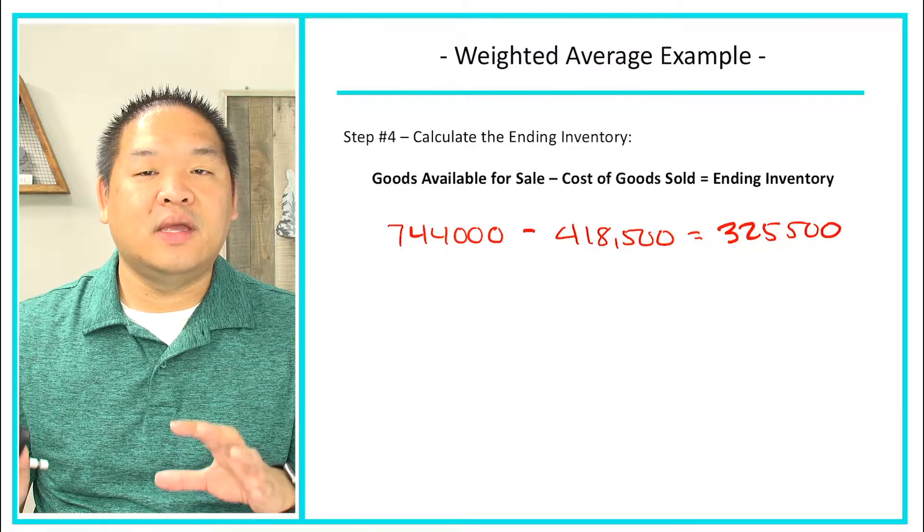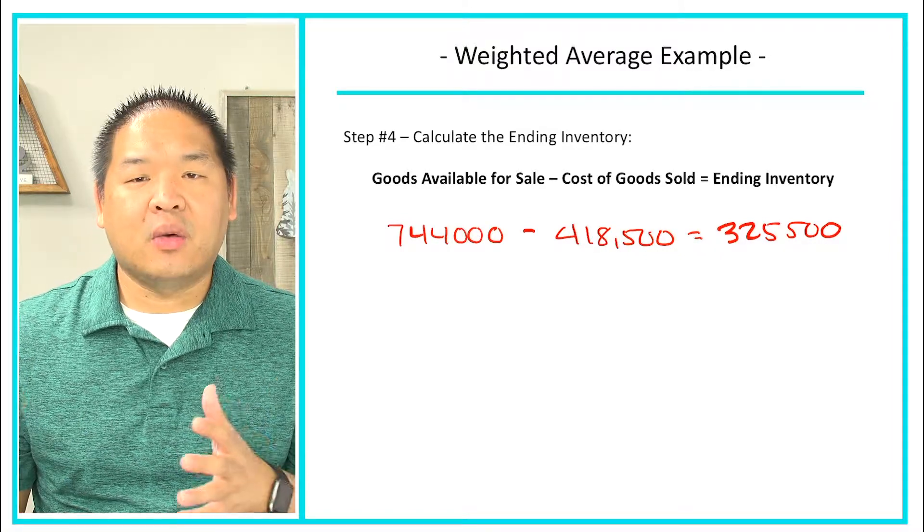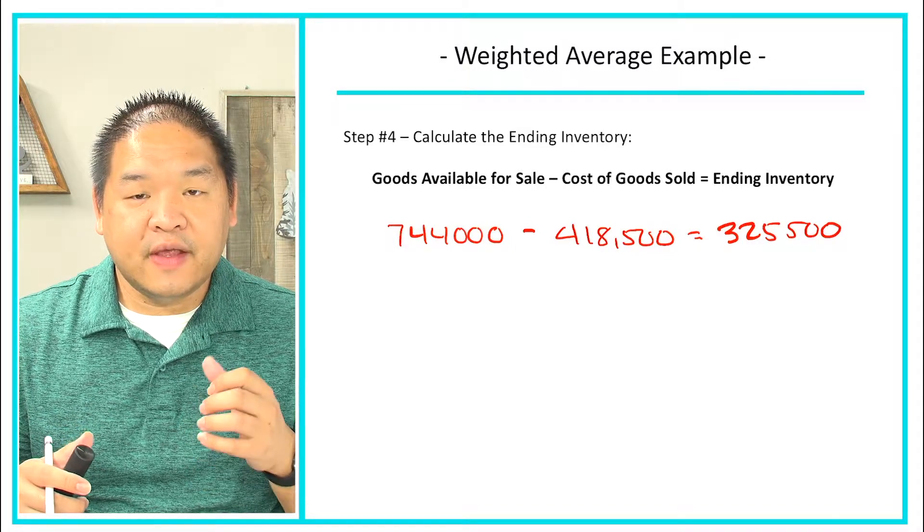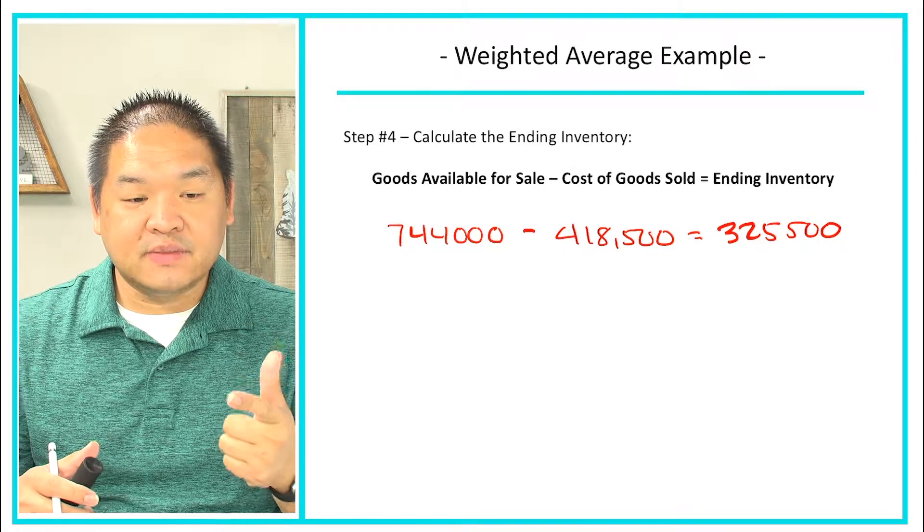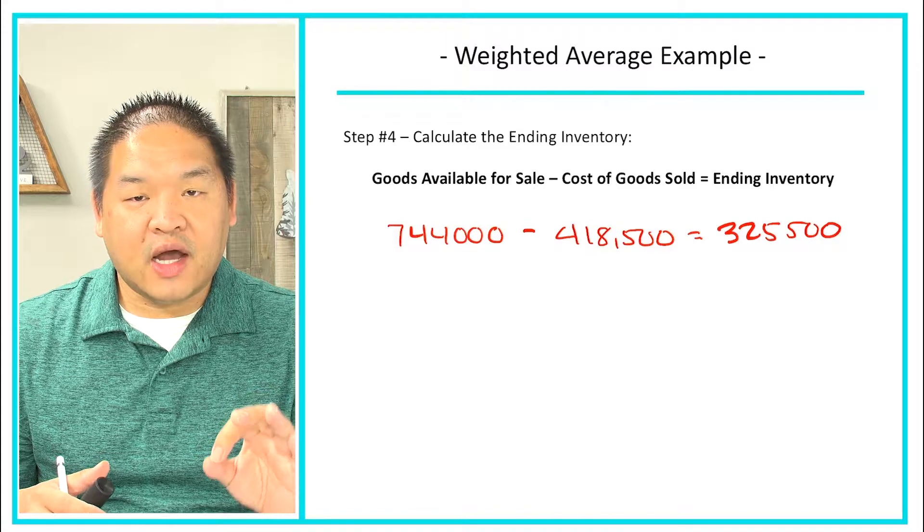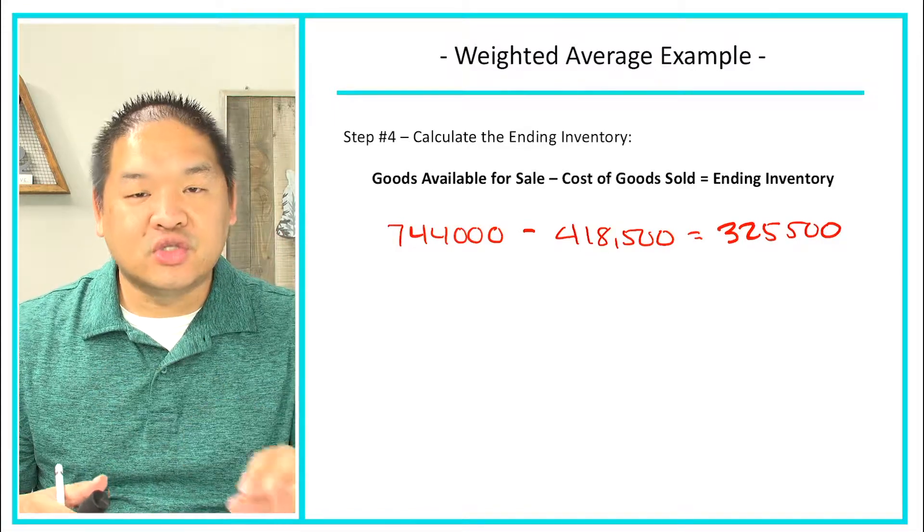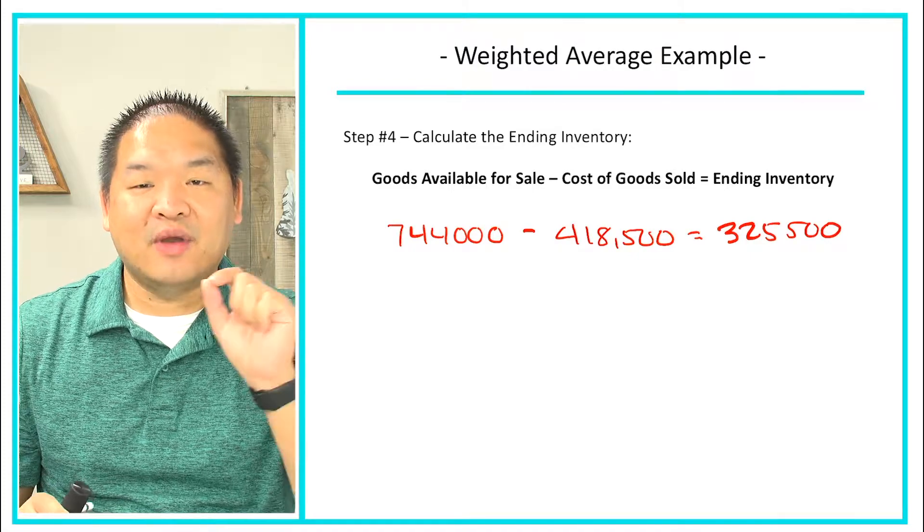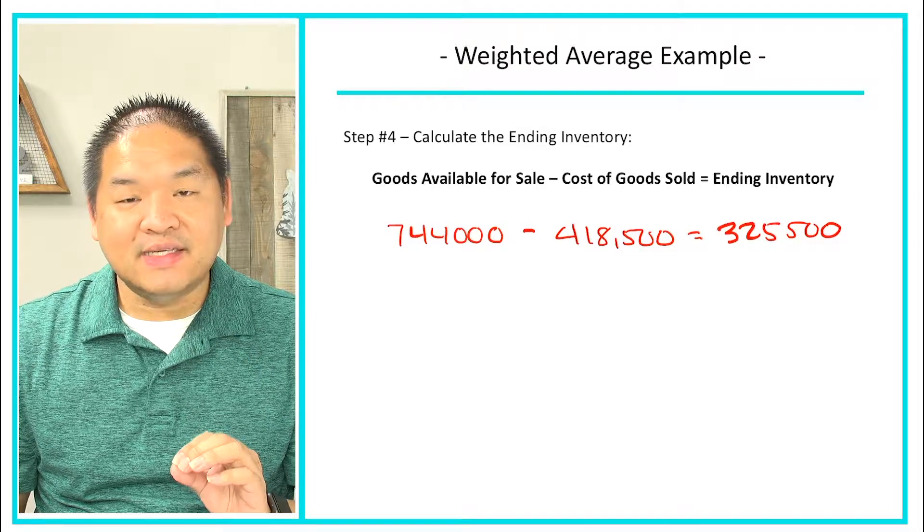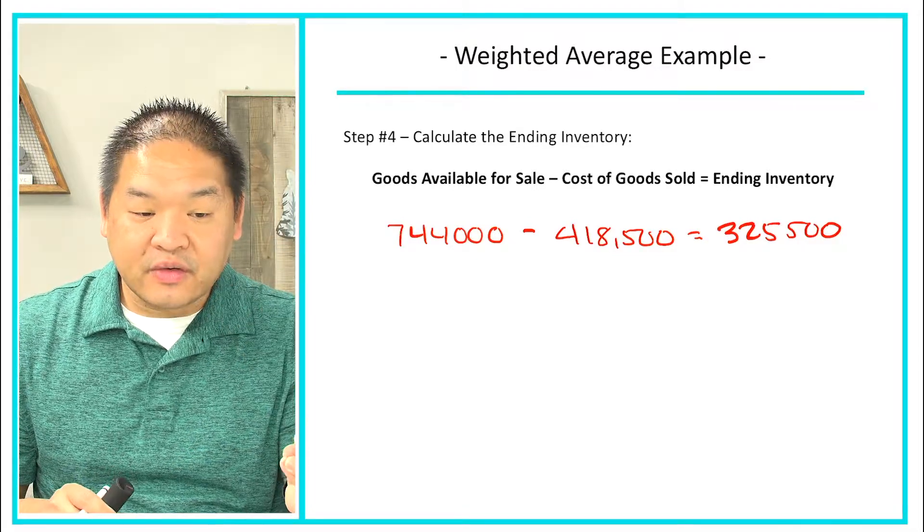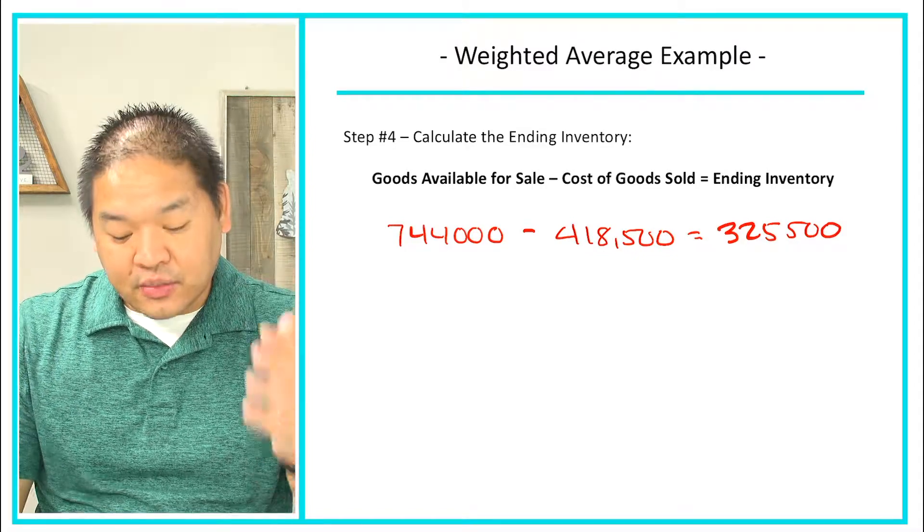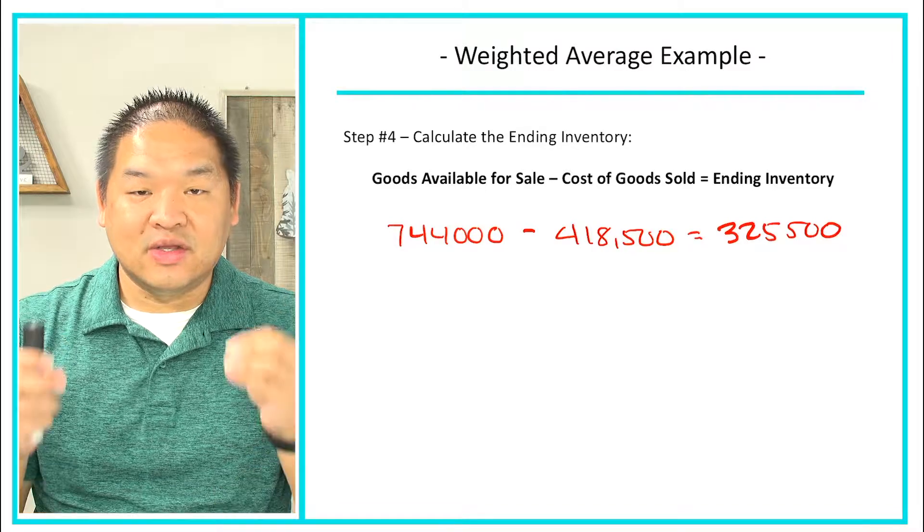So that's kind of how we do the weighted average. I know I went kind of quick, but at the end of the day all we're doing is we're trying to figure out what is our goods available for sale in cost and number of units. Once we do that we can calculate our weighted average cost. Once we have that weighted average cost we can apply that to all the units that we sold. So we're giving all 9,000 units the same cost: 9,000 times $46.50 gives us our $418,500. And so if we had $744,000 and we sold $418,500, that means the rest, $325,500, must have been still in inventory.